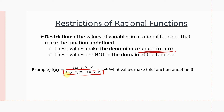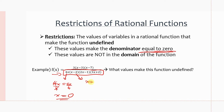Taking the first factor 4x: what value of x makes 4x = 0? If we divide by 4 on both sides, we get x = 0. That's our first restriction. For the next factor, x − 2 = 0: add 2 to each side, and we get x = 2. That's the second restriction. For 2x − 1 = 0: add 1 to each side to get 2x = 1, then divide by 2, giving x = 1/2. That's another restriction.